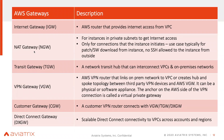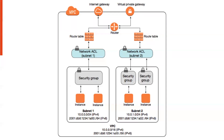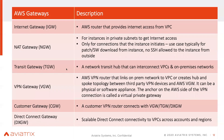Then there's the NAT gateway. When connecting to the internet in AWS, they use public subnets and private subnets — which is very specific to AWS, unlike GCP or Azure. A public subnet is just a regular subnet with a default route pointing toward the internet gateway. If you have a private subnet and want to reach the internet, you create a NAT gateway in AWS.